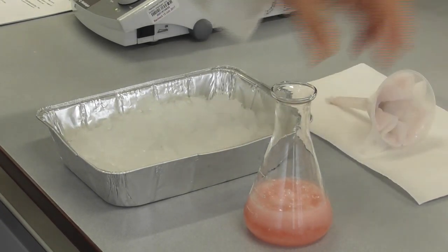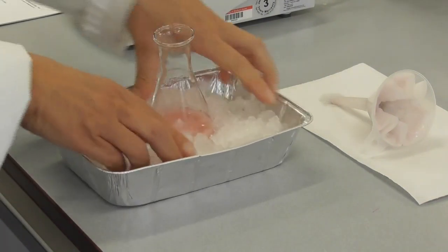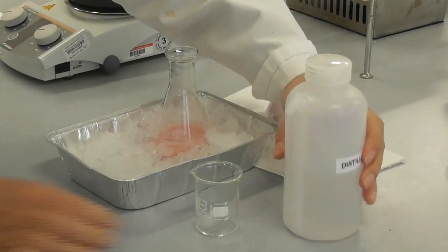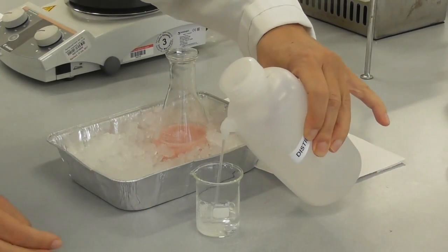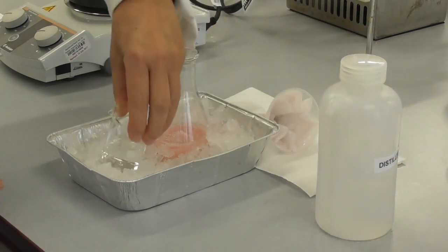Once the filtration is done we remove the filter and put the flask into an ice bath to encourage more crystallization. We add some distilled water into a small beaker and put this into the ice bath as well for cooling off.